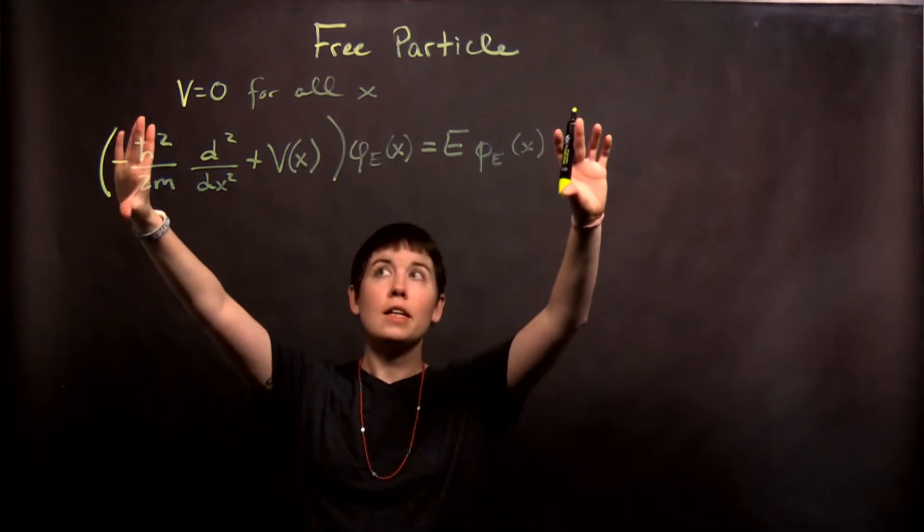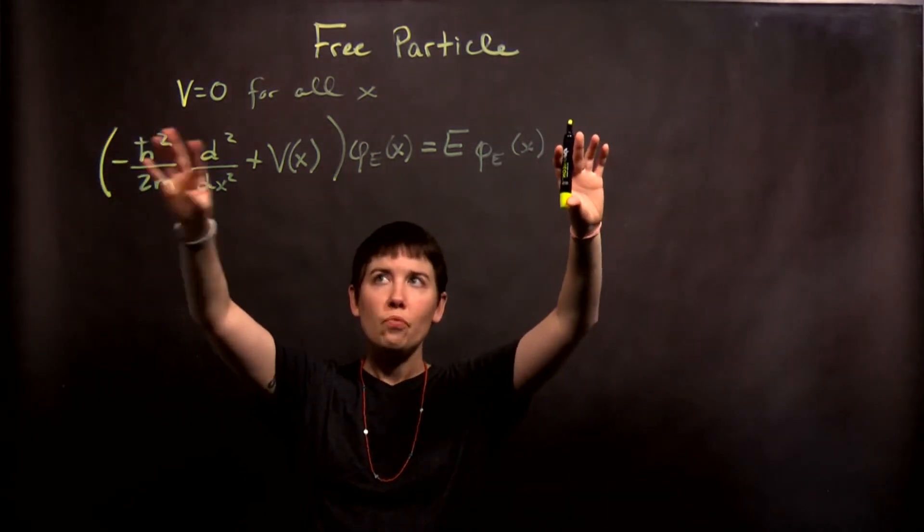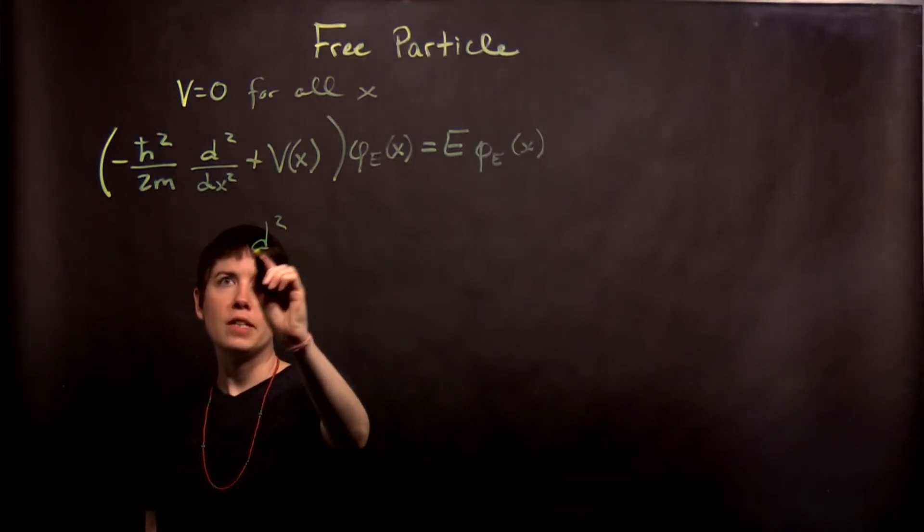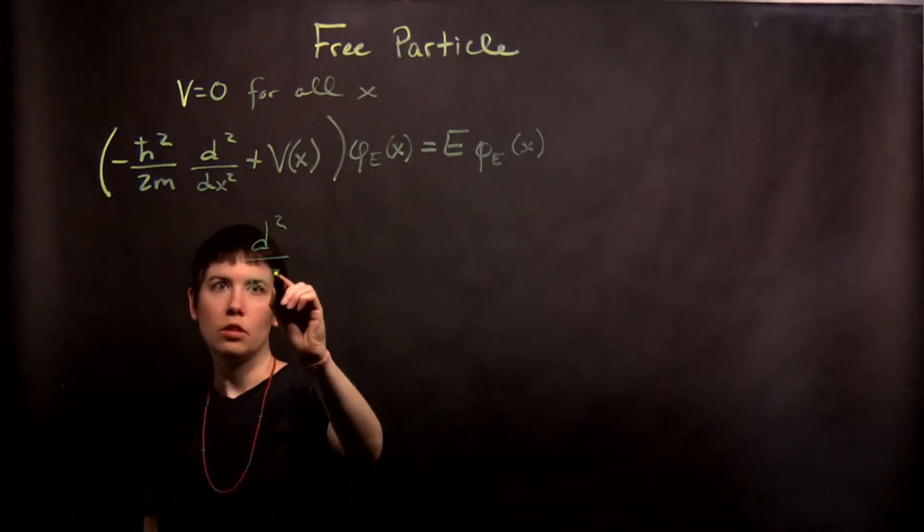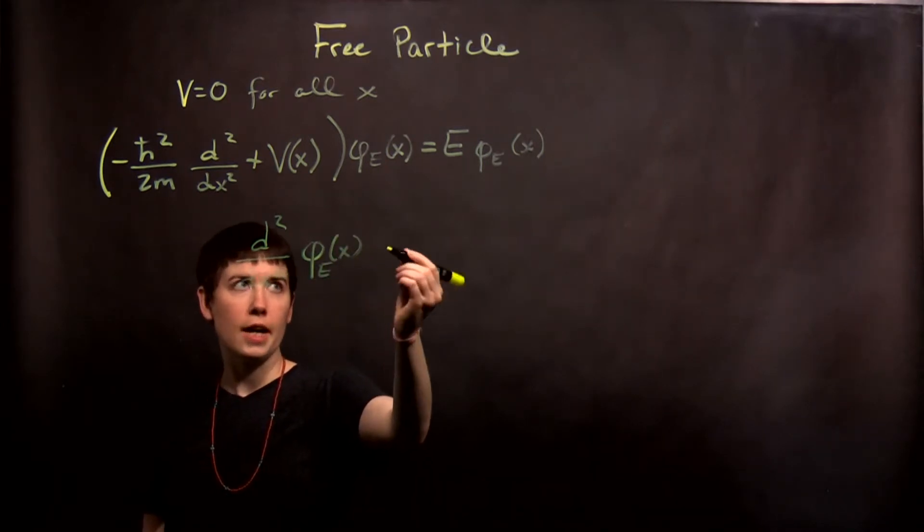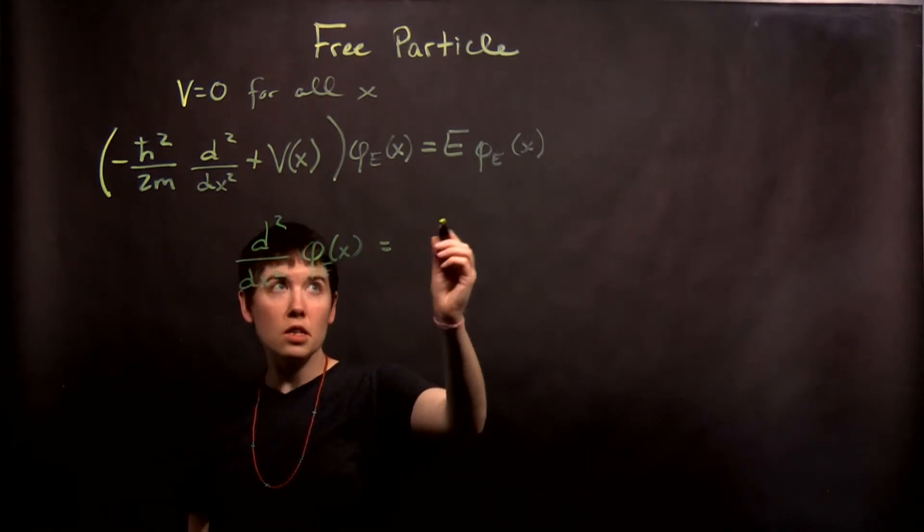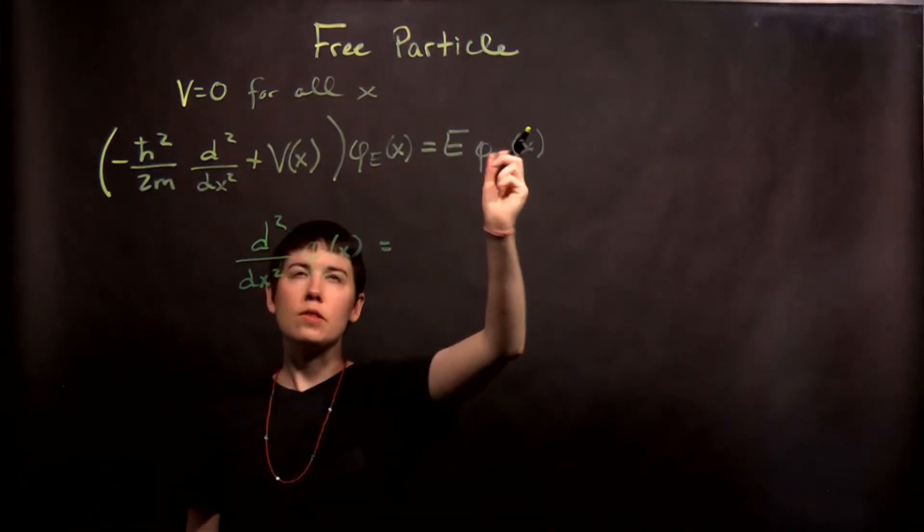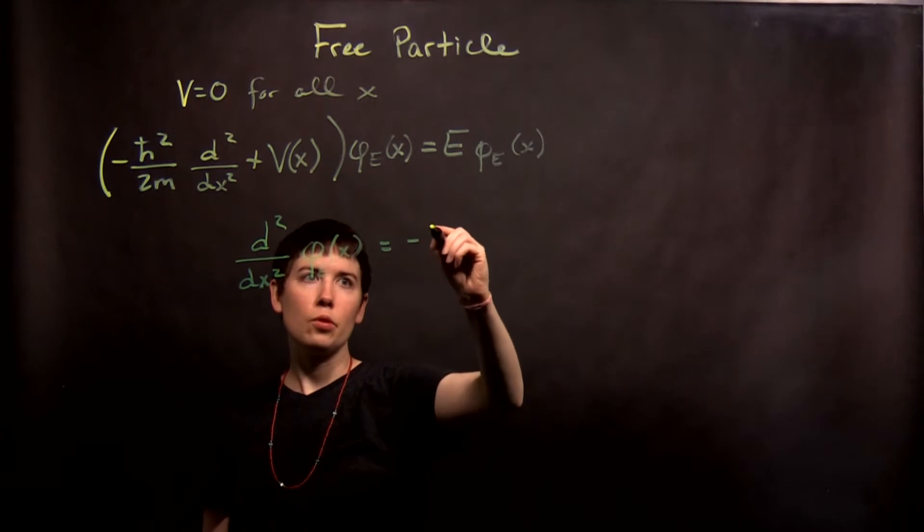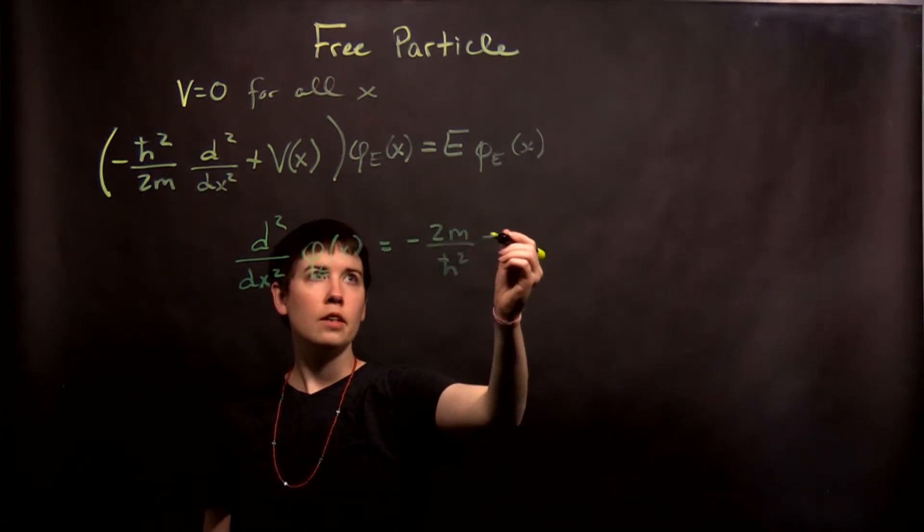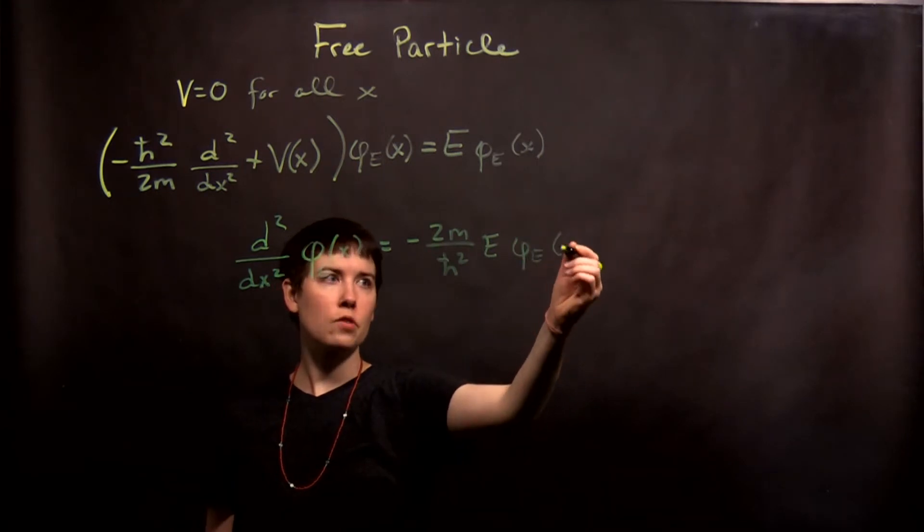So when I think about that energy eigenvalue equation, that means this term is zero. So I'm then left with my second derivative of my energy eigenstate being equal to—right, this is zero, so that's gone away. This I have multiplied up, so -2m over ℏ² E φₑ(x).